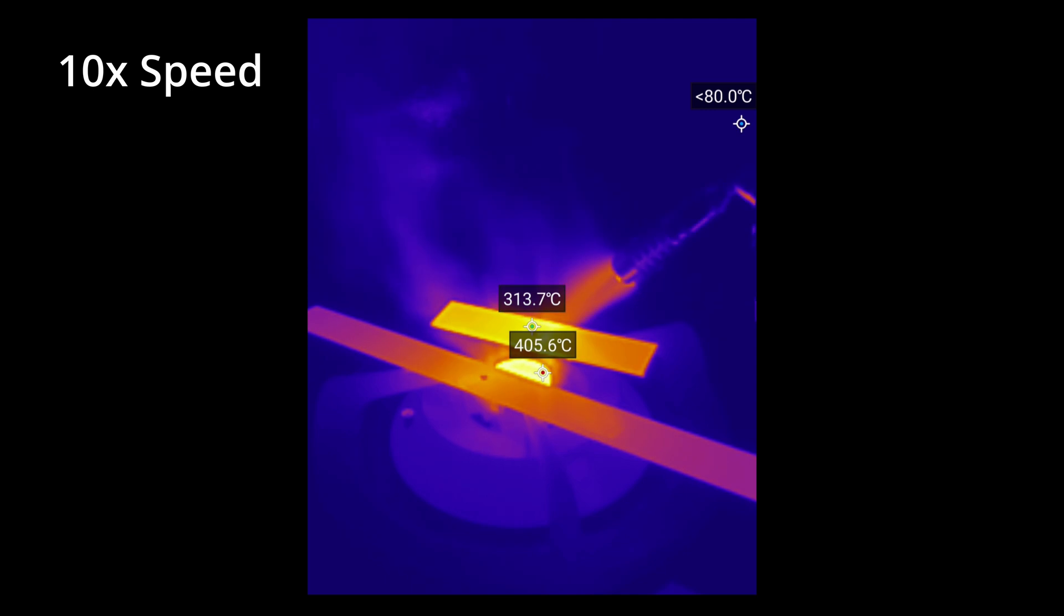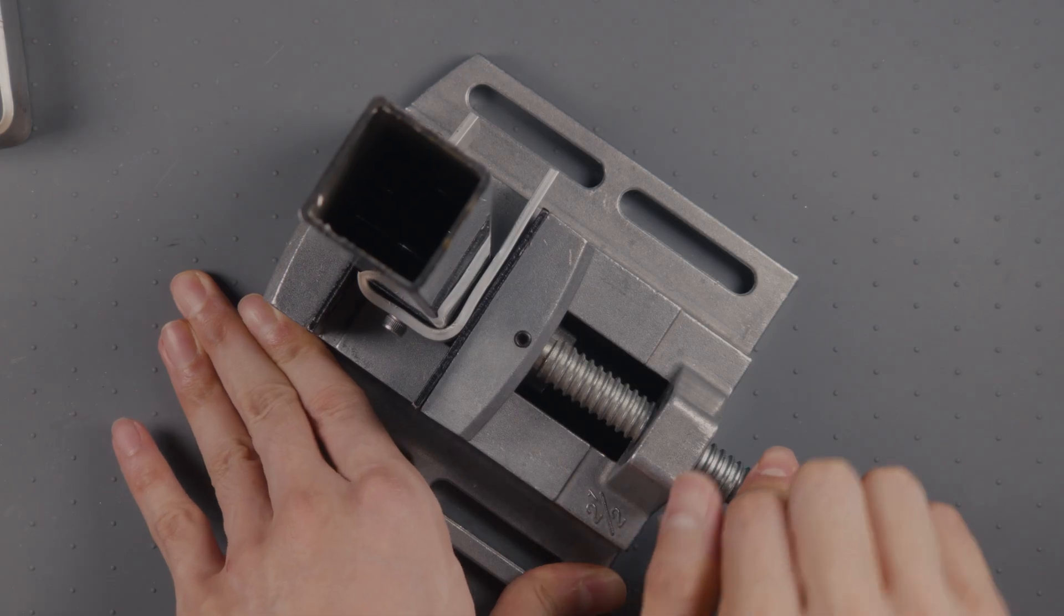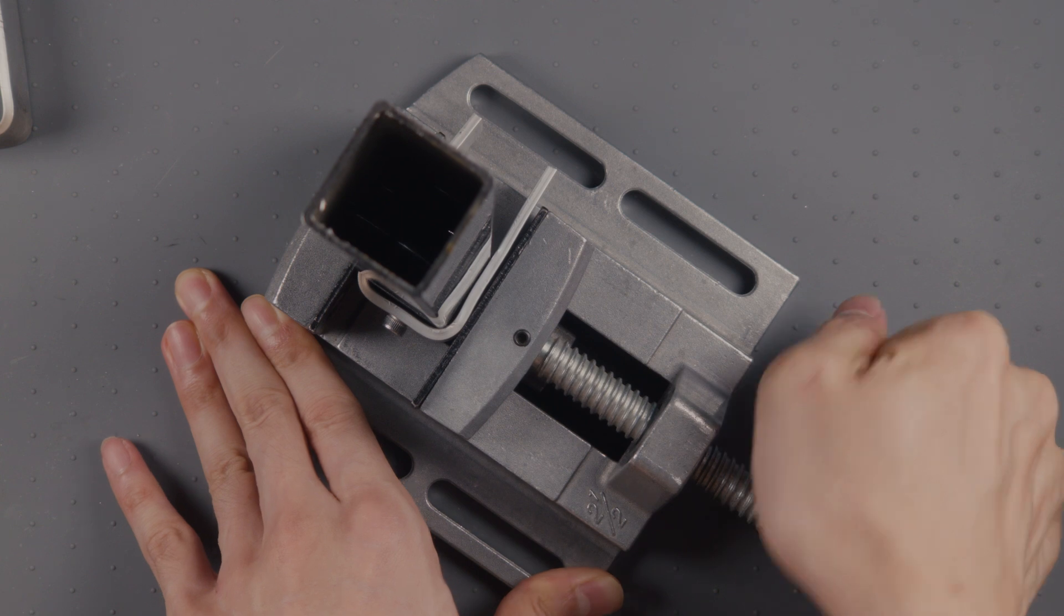I sped up the process by using a butane torch. After leaving the pieces to air cool, we can crack on with the bending. I abused my mini-vice for this but managed to get a decent result.